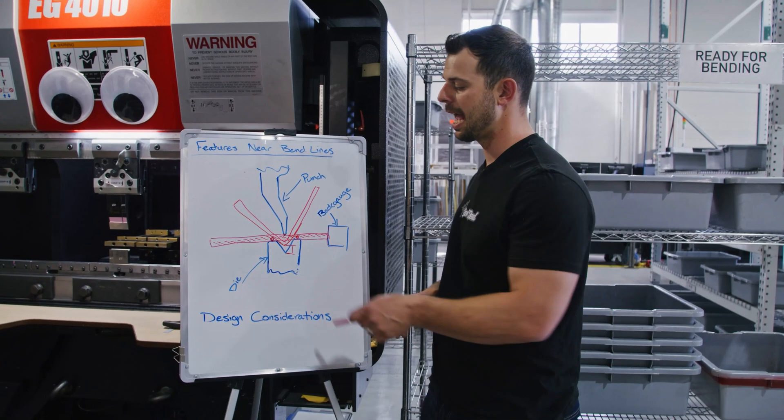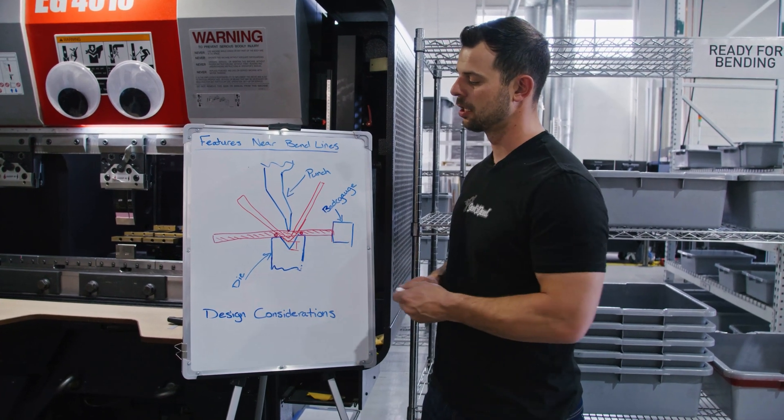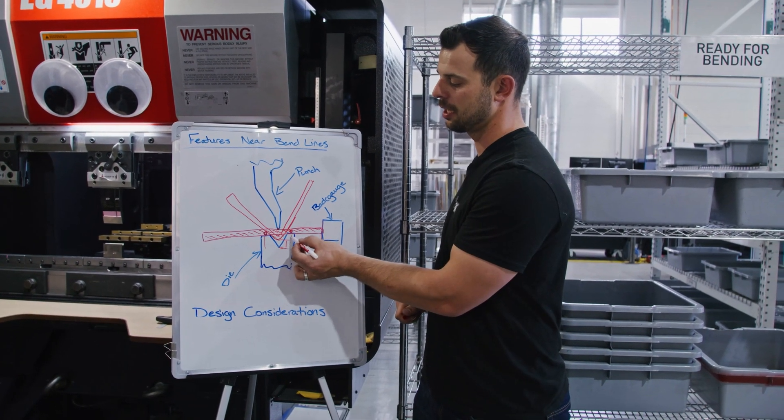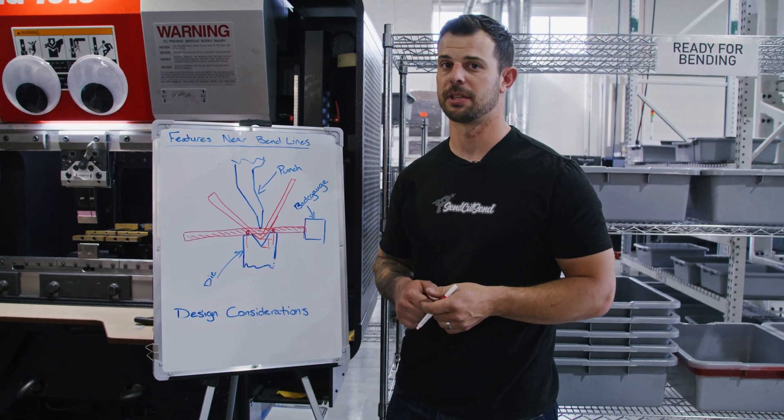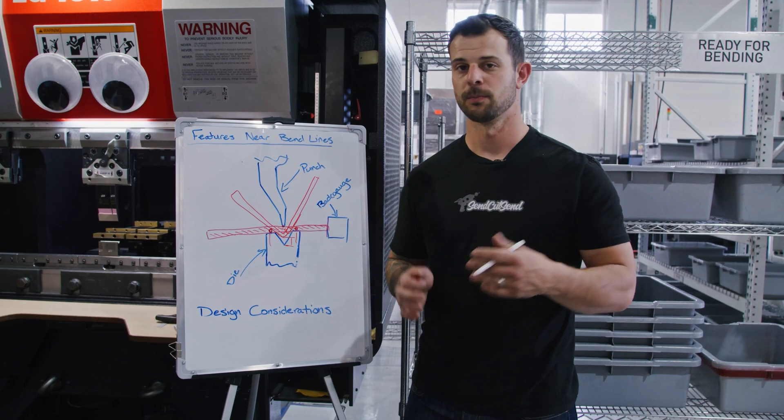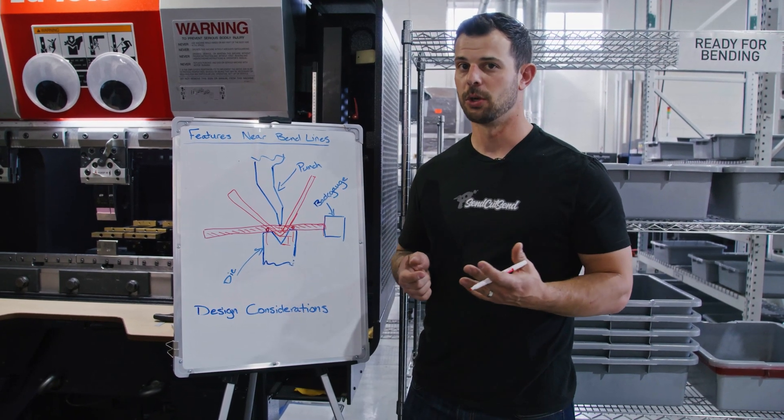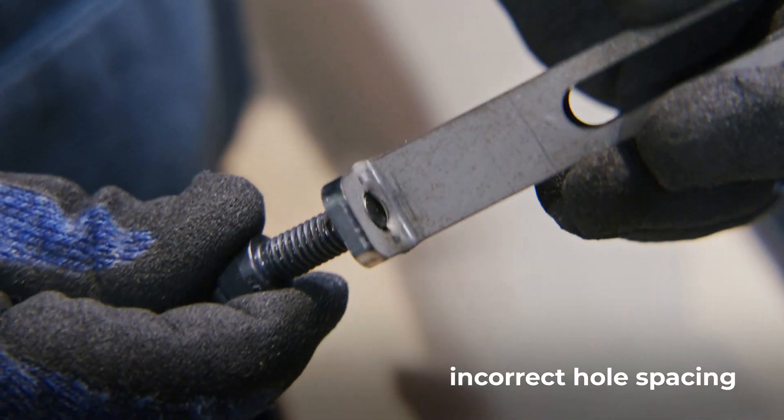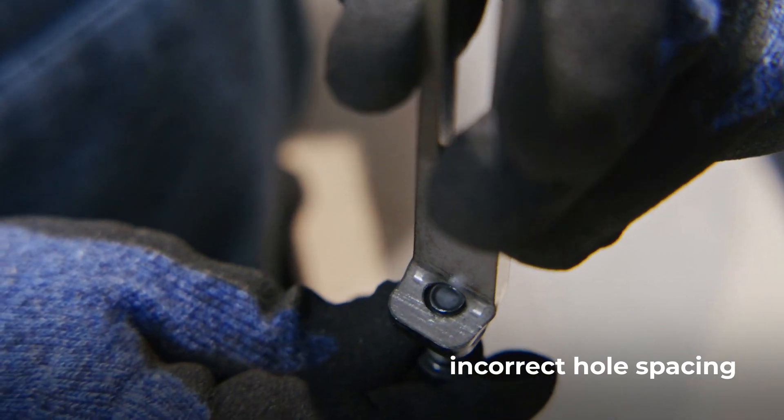And that's why in between those contact points that are within the die is liable to see some kind of distortion during the bending process. So if we have a hole set in this area, say a tapped hole, most likely it's going to be affected by distortion and not work exactly if you wanted to.